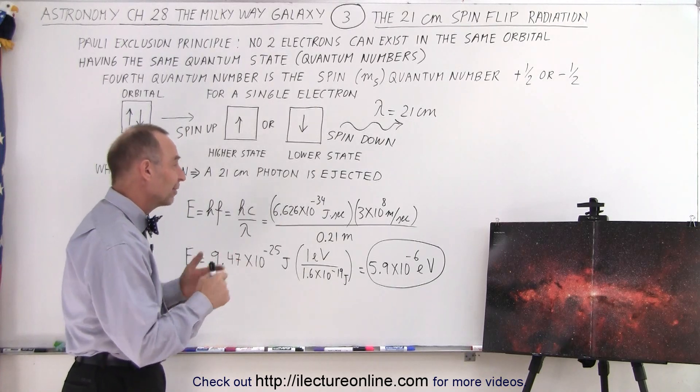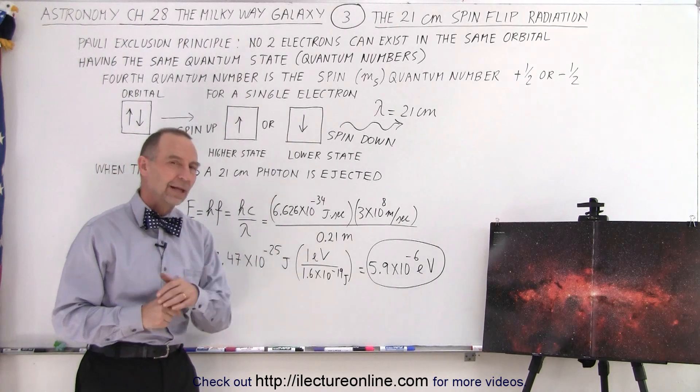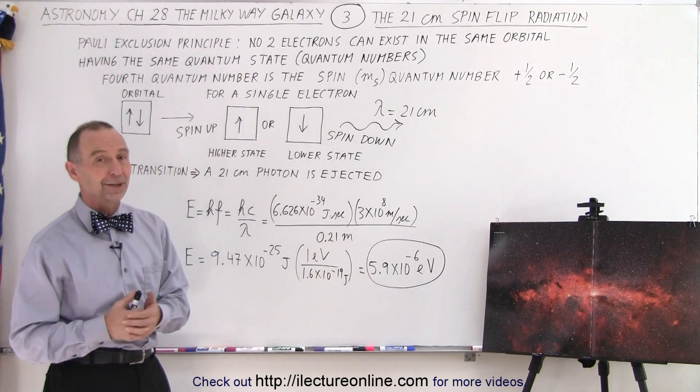And so by looking at the spin flip radiation from the hydrogen that's beyond the visible range of our galaxy, we can figure out what it looks like to some extent based upon that radiation. And that is how it's done.